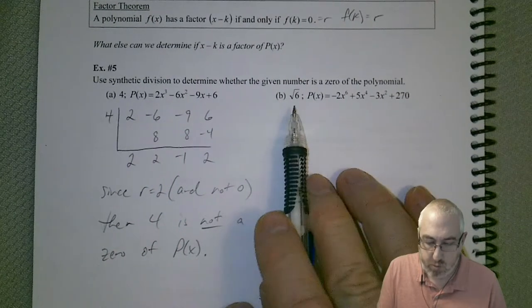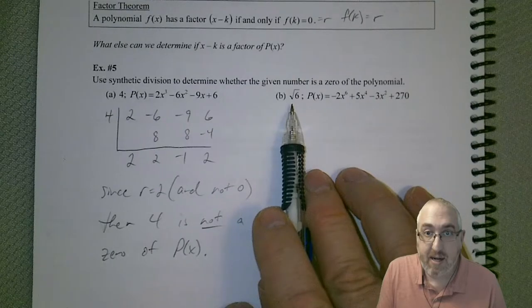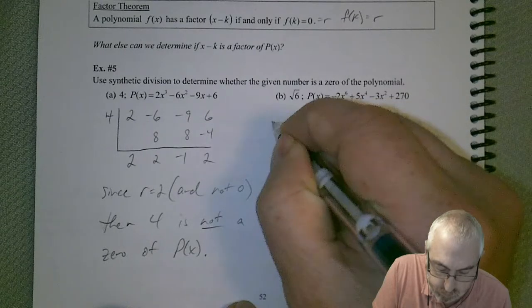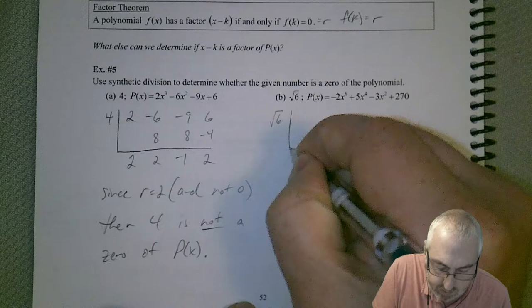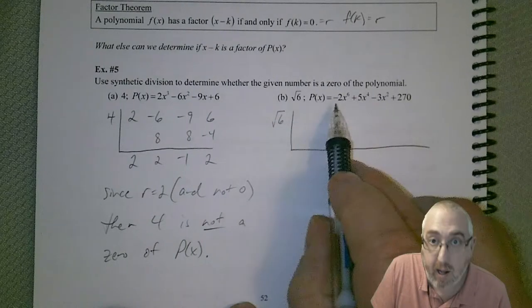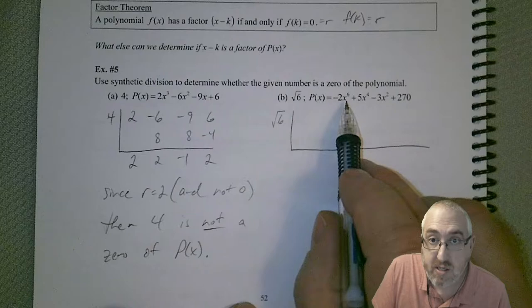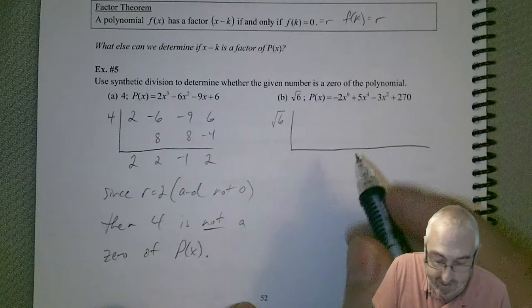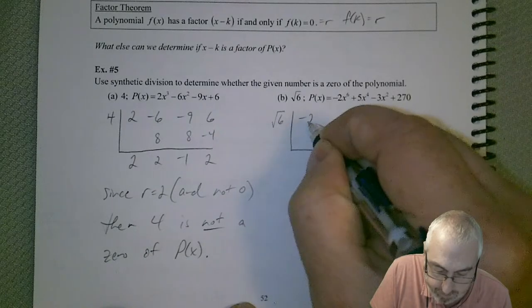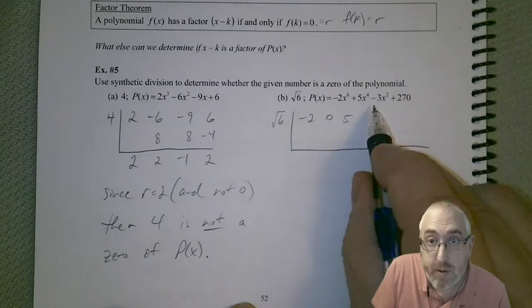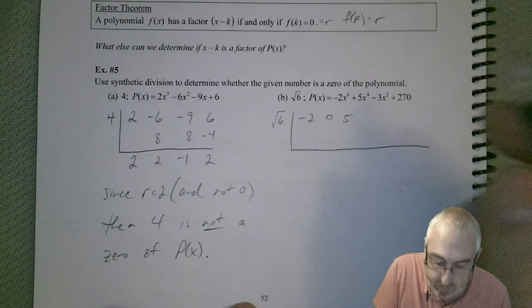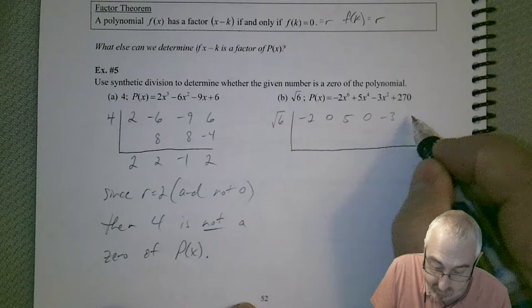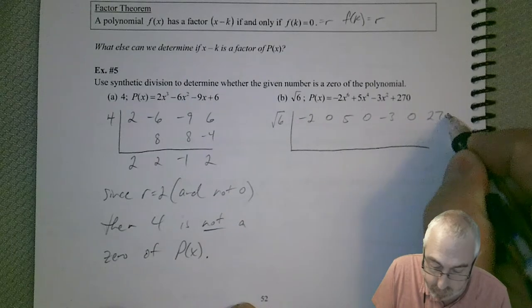So what about this one? So we got the square root of 6, and we have this polynomial. So we got that on the outside, and now be careful. We have x to the 6th, and then x to the 4th. So we're missing x to the 5th. So we need to keep track of that by using a 0. And we're missing x cubed. Again, let's keep track of it with a 0. We're missing x, so we need another 0. A lot of 0s here. But let's see what happens.